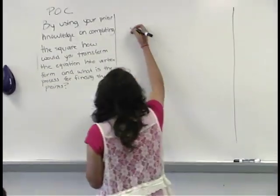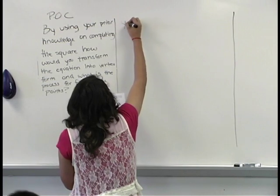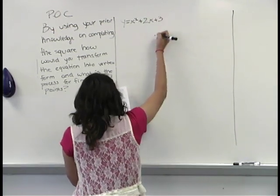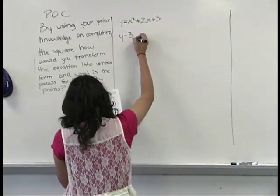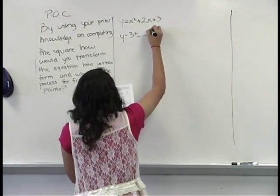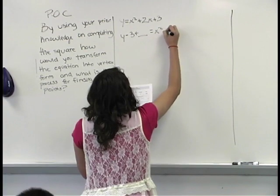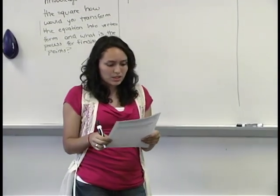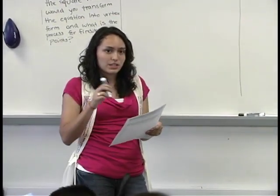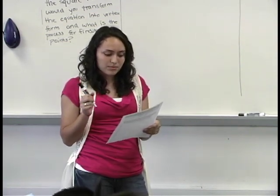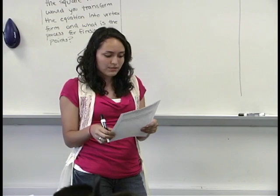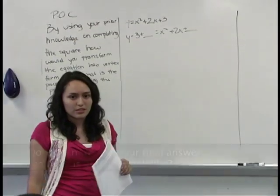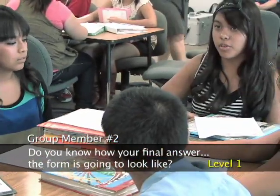I'm going to work out what I know. I know you're supposed to use completing the square to transform it into vertex form because you need it to be in vertex form to graph, and I know that the first step to graphing after you transform the equation is finding and plotting the vertex. But here's where I get lost in completing the square. And do you know how your final answer, the form, is going to look like? The vertex form?